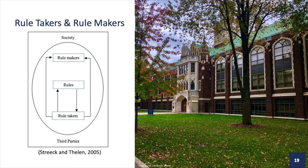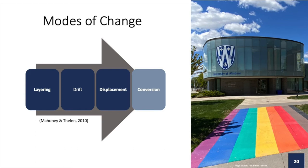I also looked to Mahoney and Thelen's modes of change. They share four modes of change. First, layering is the introduction of new rules on top of or alongside existing ones. Second, drift is the changed impact of existing rules due to shifts in the environment. Third, displacement is the removal of existing rules and the introduction of new ones. And finally, conversion is the changed enactment of existing rules due to their strategic redeployment. I omitted the concept of conversion because I couldn't connect the concepts with the findings. Mahoney and Thelen suggest that drift and layering are the most promising strategies for change in a system with strong veto players. These two strategies suit universities because they have organized labor.